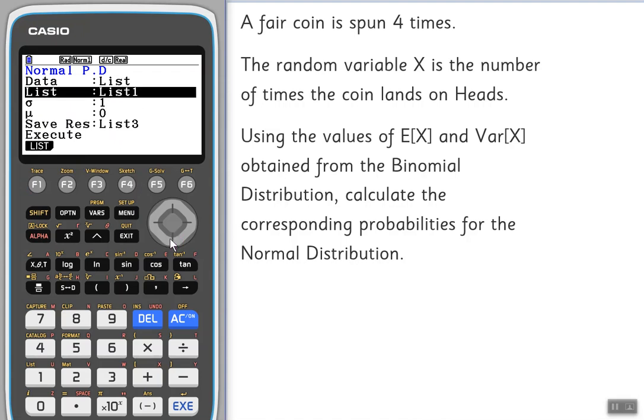We've got list one there and then we need to set our standard deviation and our mean. Now unusually these are the other way around, it's easy to get caught out with this, so make sure you put the standard deviation in first. Now we've worked out the variance and the variance is one, but the standard deviation is the square root of the variance so we need to put the square root of one. Now the square root of one in this case is going to be one, but I'm going to type it in as square root of one because it's a good habit to get into to remind yourself to always type that square root sign, because you need the square root of the variance to get the standard deviation.